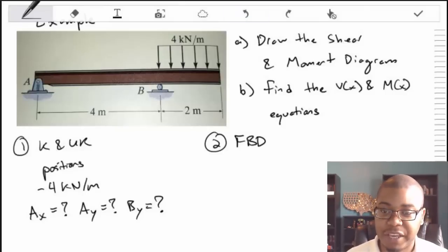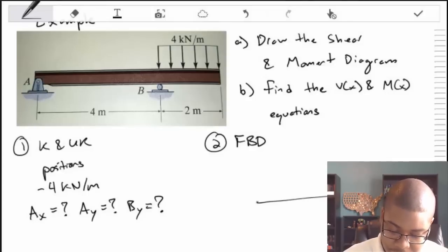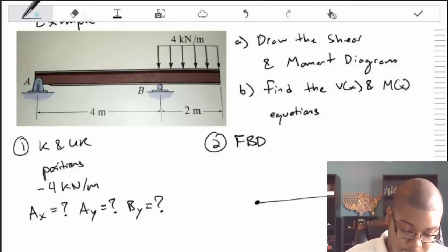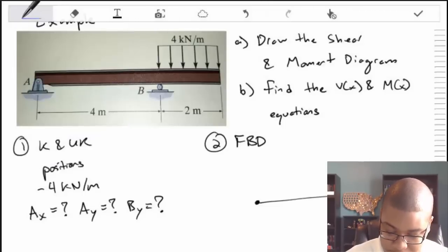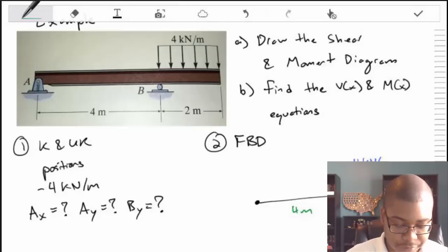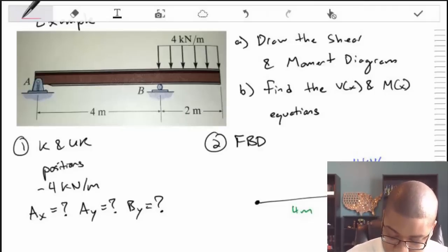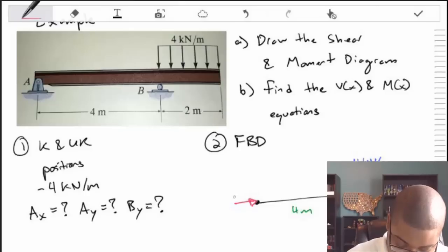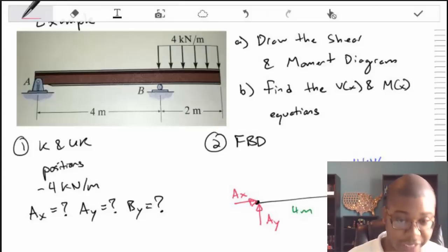Now let's create a free body diagram. When we say free body diagram, we mean we free the body from its constraints — we remove supports A and B and replace them with the reactions, freeing the body from the ground. We put our known 4 kilonewton per meter distributed load, dimensional information of 2 meters and 4 meters, and our support reactions: BY at the roller, and AX and AY at the pin, according to the translation rule.